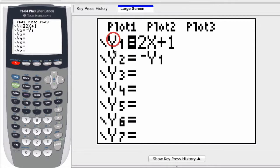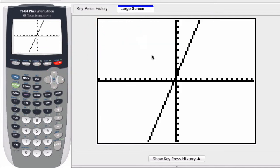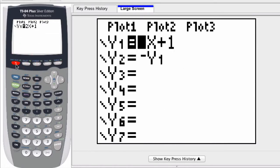So in this case, I have two functions. The first function is highlighted, 2x plus 1. The second one is not, it's negative y1. That just means the inverse of the first function. If I press the graph button, only the first function is displaying, which might be what I want.